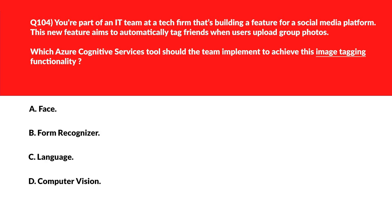Now we need to achieve image tagging functionality — which Azure Cognitive Service tool should we use? Option A says Face — Face is used to detect, compare, and identify human faces in images, which is essential for tagging friends in social media, like how we do on Facebook or Instagram. This looks good, so we'll keep Face. Option B says Form Recognizer — Form Recognizer is used to extract data from forms or invoices, not suitable for analyzing photos, so incorrect.